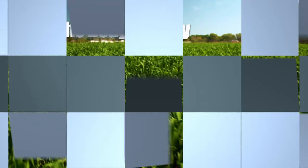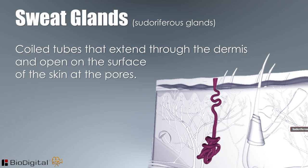Sweat glands, or sudoriferous glands, are coiled tubes that extend through the dermis and open on the surface of the skin at the pores. The sweat or perspiration eliminated by these glands contains water, salt, and some body wastes.